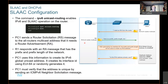R1 responds with a router advertisement message that has the prefix and prefix length. PC1 uses this information to create its own IPv6 global unicast address — the GUA. It creates the interface ID using EUI-64 or randomly generates it. In today's world it's random; at the beginning, EUI-64 was used, but I'll show you why that's not a good idea in a minute.